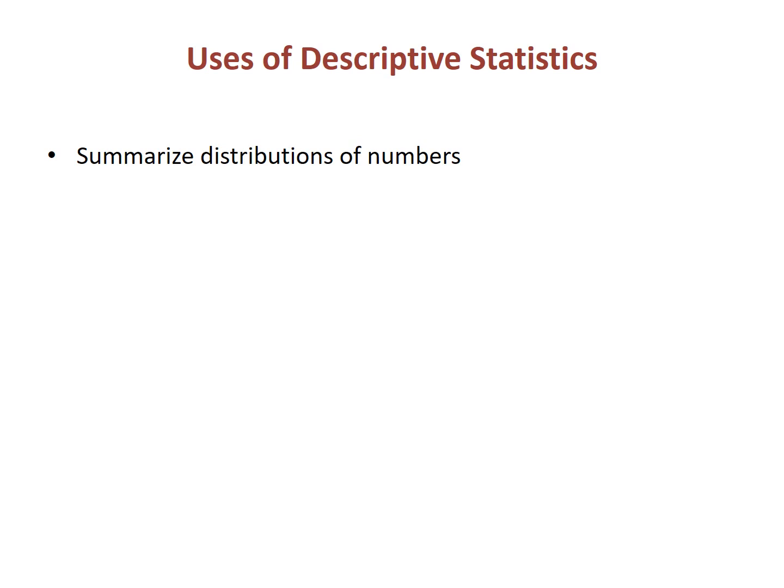In this video, we have looked at both arithmetic and positional descriptive statistics, and how to determine them in Excel. There are several uses for descriptive statistics. First, they can be used to describe a distribution of numbers simply — for example, providing a measure of central tendency and dispersion such as the mean and standard deviation gives a good sense of a distribution instead of listing all 50 values. Second, descriptive statistics can be used to inspect the data for evidence of irregular patterns and problems, such as skewed distributions and outliers.